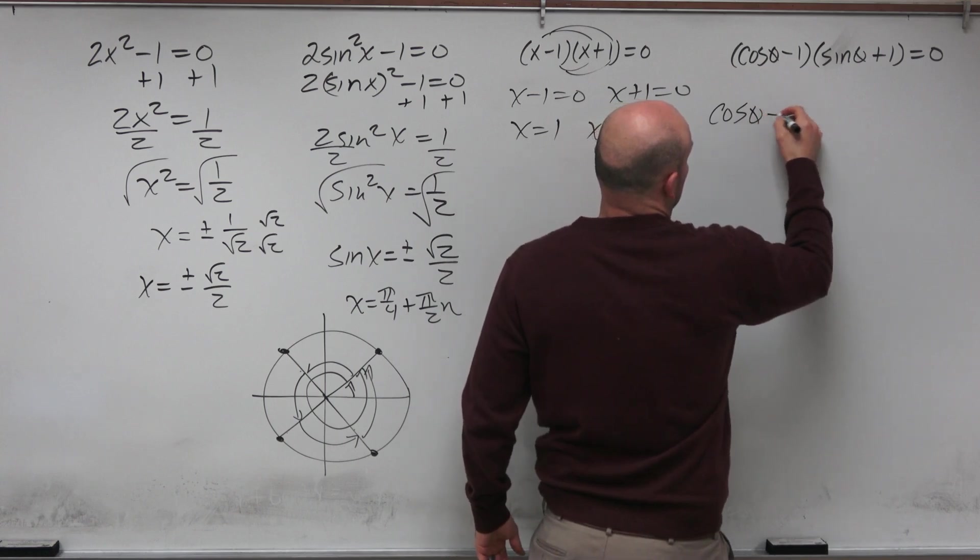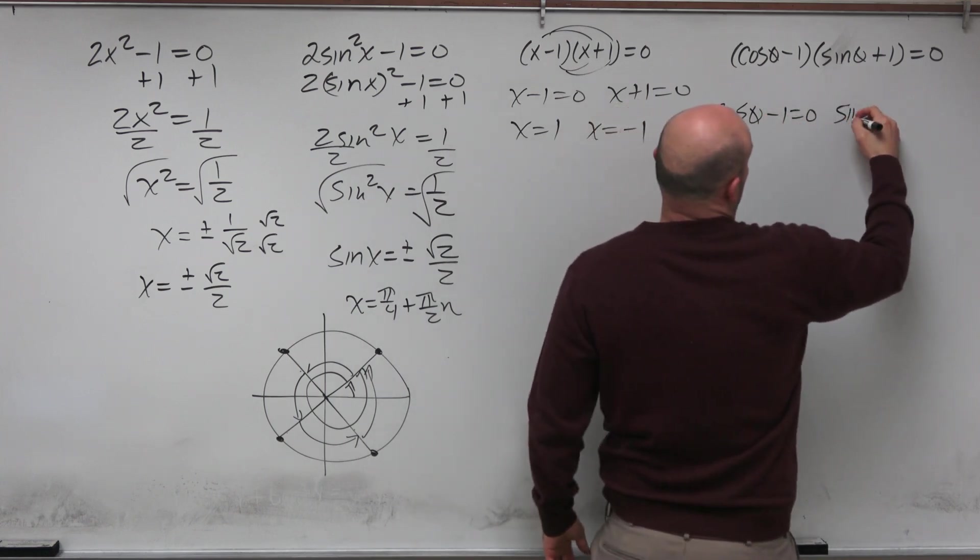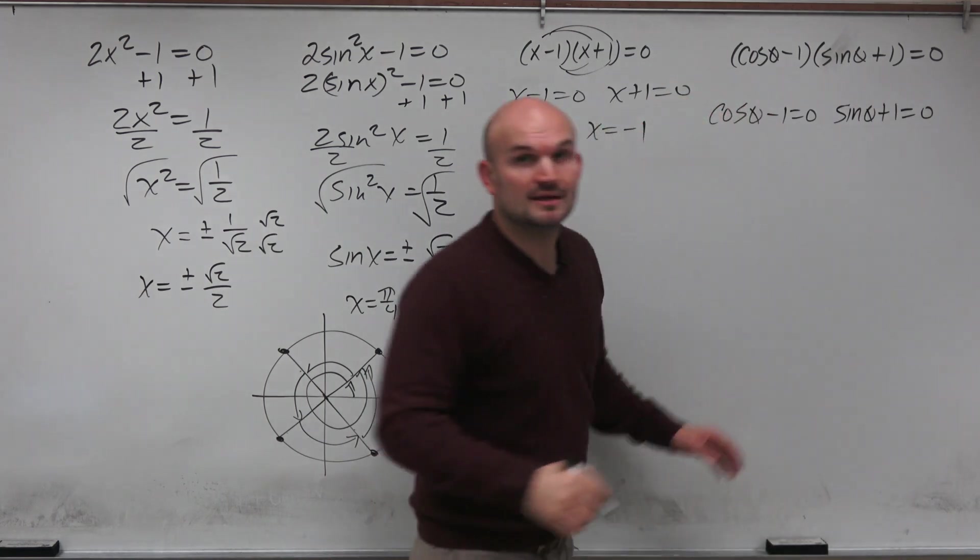Now, x equals 1, x equals negative 1. So with trig, it's the same thing. Don't multiply these together. You have a product equal to 0. Apply the 0 product property. Say, cosine of theta minus 1 equals 0, and sine of theta plus 1 equals 0.